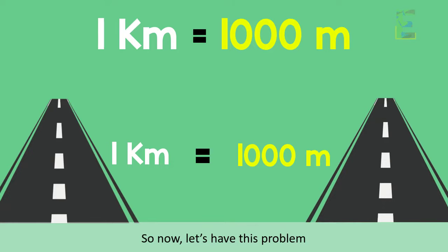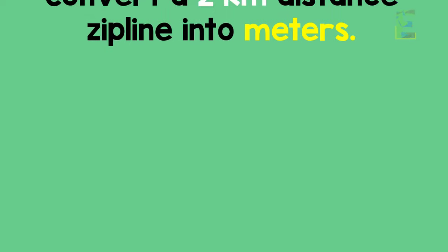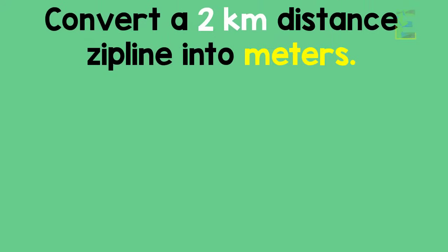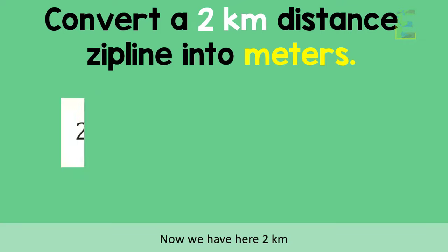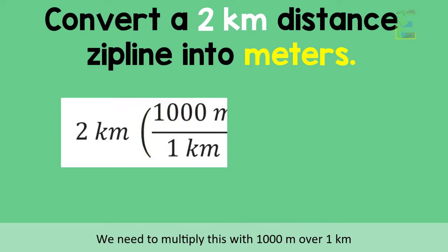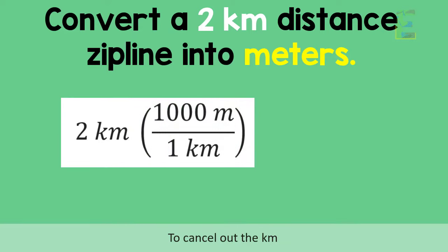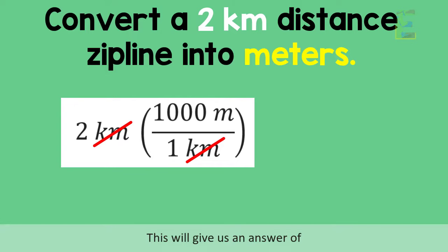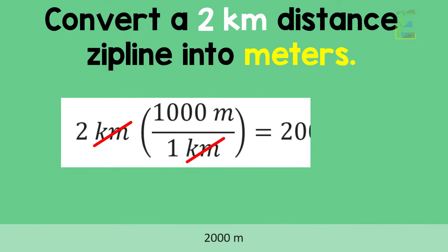So now let's have this problem. Convert a 2 kilometer distance zipline into meters. Now we have here 2 kilometers. We need to multiply this with 1,000 meters over 1 kilometer to cancel out the kilometer. And since 2 times 1,000, this gives us a final answer of 2,000 meters.